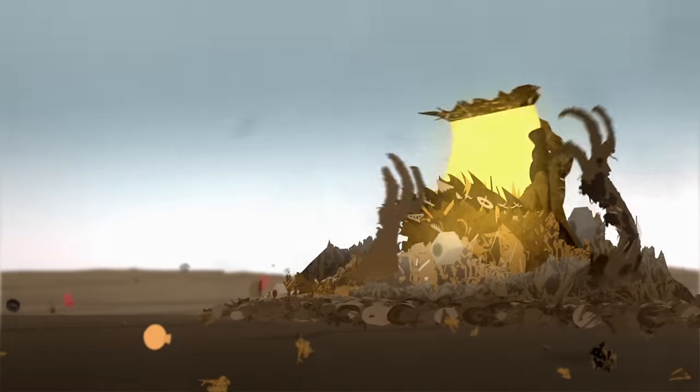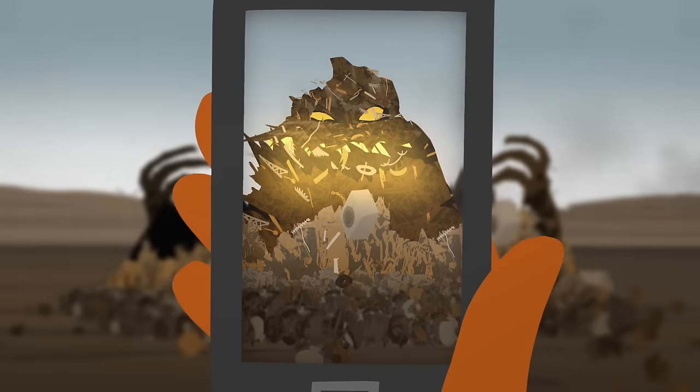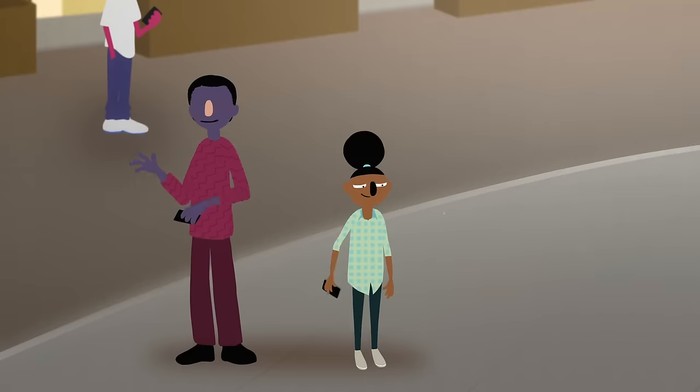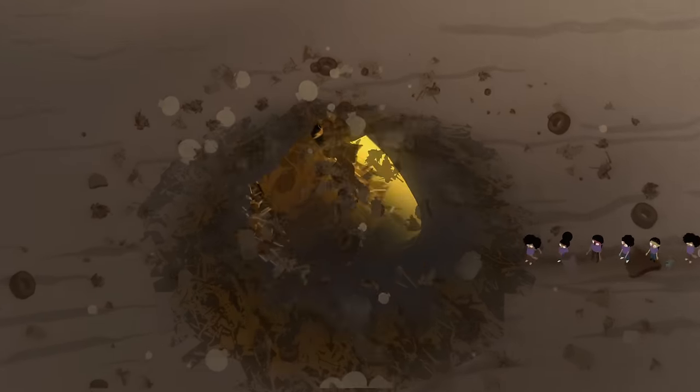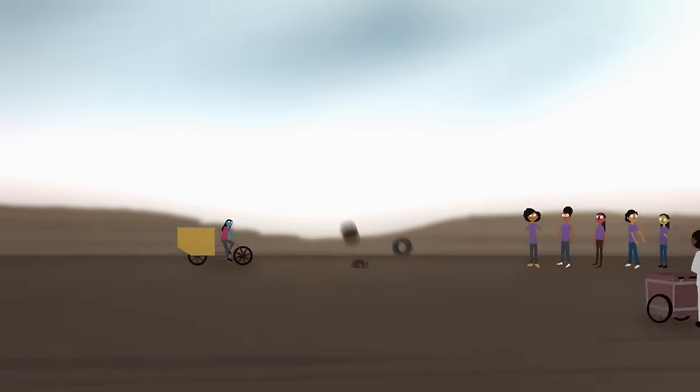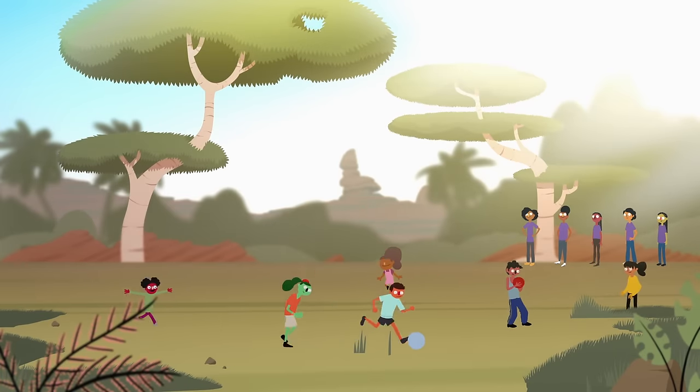Team Charis realised that in parts of Nigeria, lots of people get sick because rubbish isn't cleaned up properly. So they created Discardius, a phone app to report waste and have it taken away safely by eco-friendly cars. See? Sometimes a healthier world is just one great idea away.